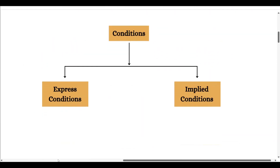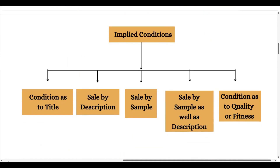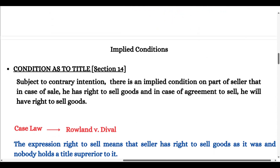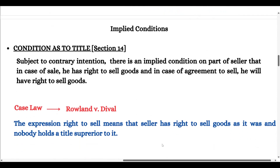So express and implied conditions are the two types of conditions. If we talk about implied conditions, there are five types: condition as to title, sale by description, sale by sample, sale by sample as well as description, and condition as to quality or fitness.